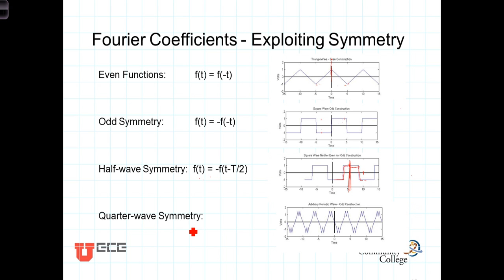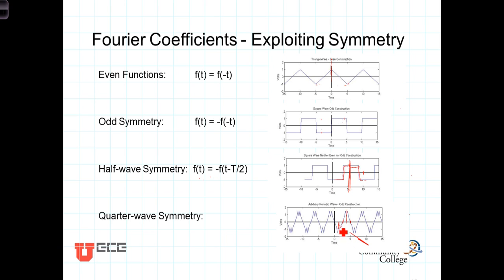Finally, quarter-wave symmetry. Quarter-wave symmetry must have half-wave symmetry. This function has a period of 5 and is half-wave symmetrical. Once you've demonstrated it has half-wave symmetry, it also has quarter-wave symmetry if the waveform is symmetrical about the midpoint of each of the positive and negative lobes. Here's the positive lobe and there's the negative lobe — it is symmetrical about those half-points. If this is T/2, that would be T/4; this lobe is symmetrical about T/4 and 3T/4.